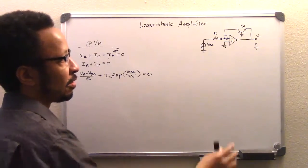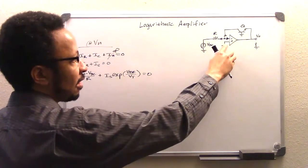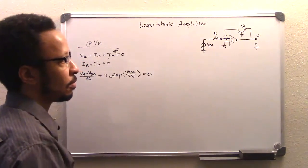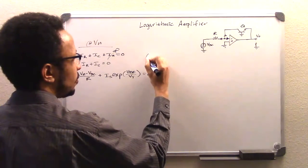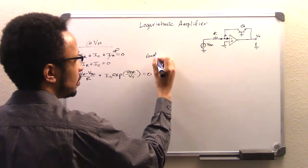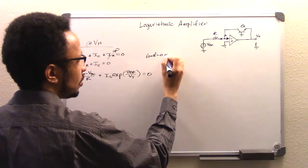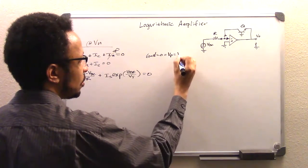the positive, the non-inverting terminal of the op-amp. And VP is set at ground. So ground equals zero, which equals VP, which equals VN.